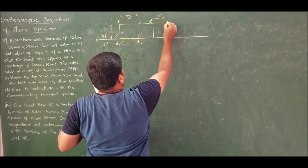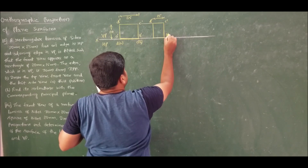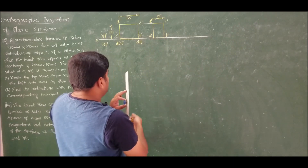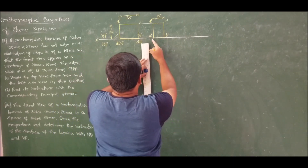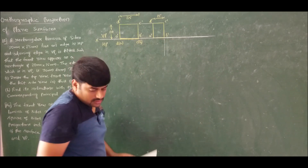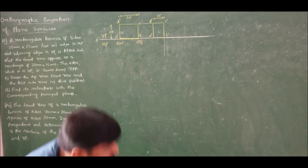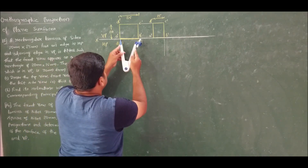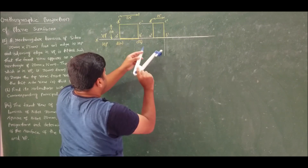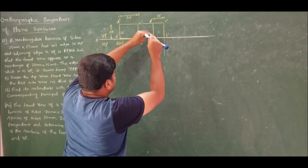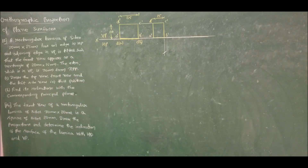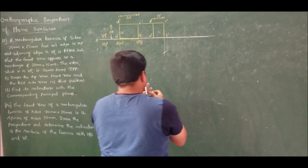So this is D', C', B', and A'. DA is here. I will rotate at this end. Using a compass, I will measure this distance and intersect. Measure this and from here I will intersect. Now join the points.